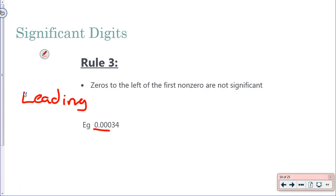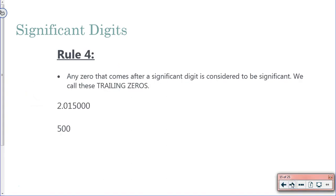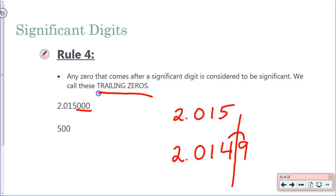Zeros to the left of the first non-zero are not significant. We call these leading zeros because they go first. They come first. So the only thing that actually matters in this measurement is that you are at 34 of whatever that little measure happens to be. The zeros just show that you're at a very small number. Rule number four: Any zeros that come after a significant digit is considered to be significant. We call these trailing zeros. They trail the significant numbers. It's important to note that these are significant because if you were to look at a number like 2.015 without the zeros, this implies a different level of accuracy. If I had 2.0149, but I had to round it, I would round that up to a five. This is different than 2.015000. So the more digits you have, the more accurate you are.